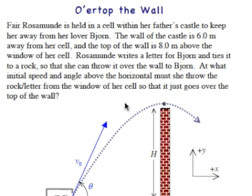Rosamund writes a letter for Bjorn and ties it to a rock so that she can throw it over the wall to Bjorn. At what initial speed and angle above the horizontal must she throw the rock from the window of her cell so that it just goes over the top of the wall?